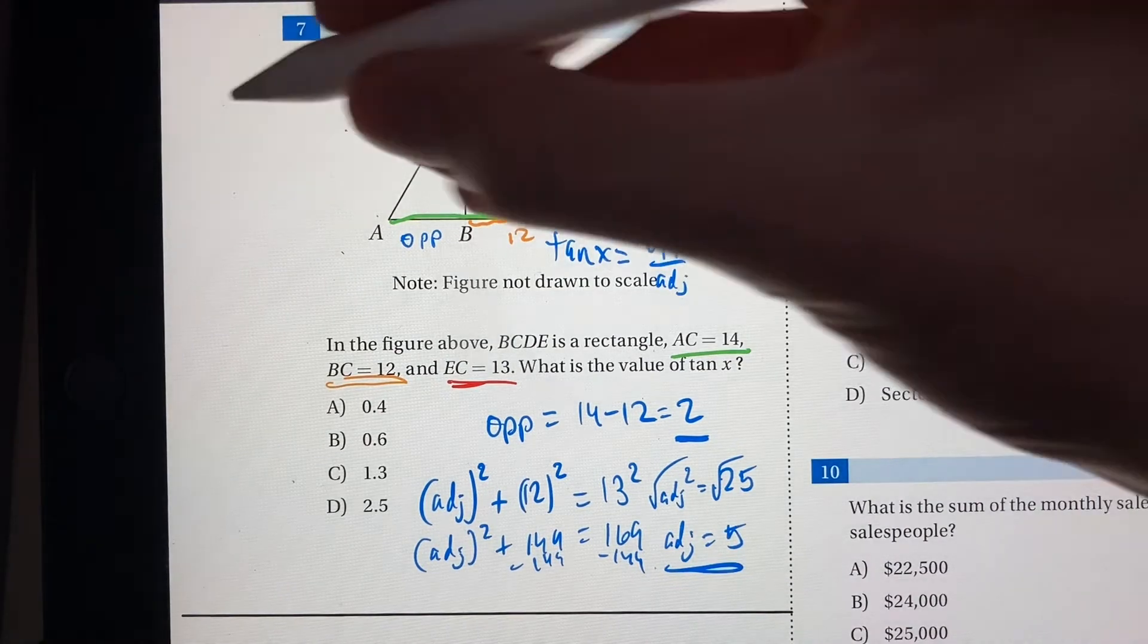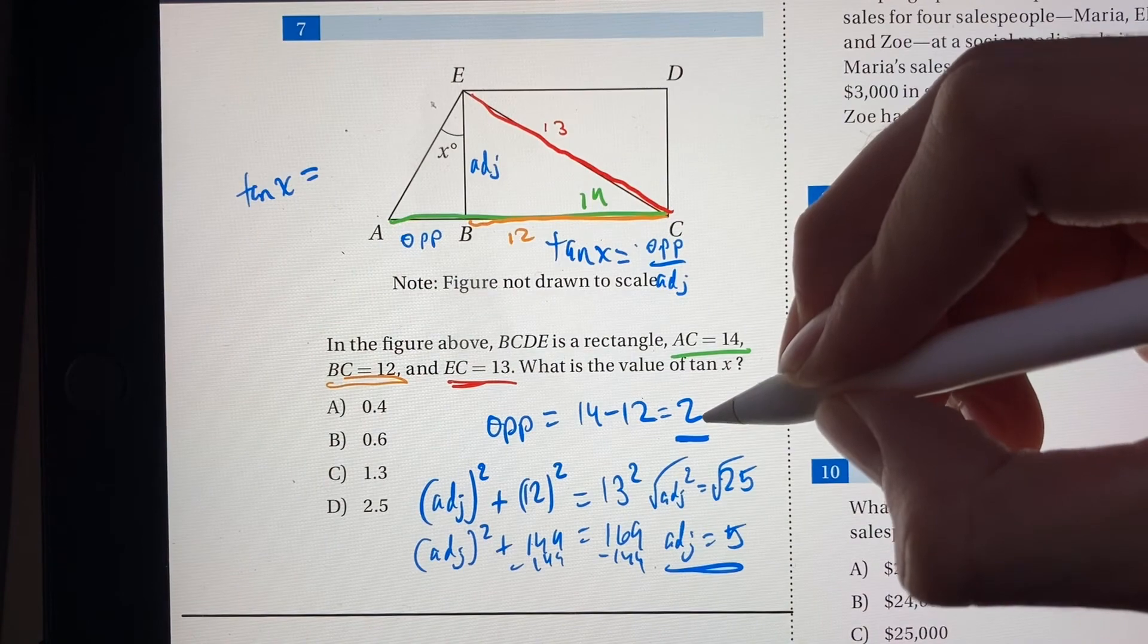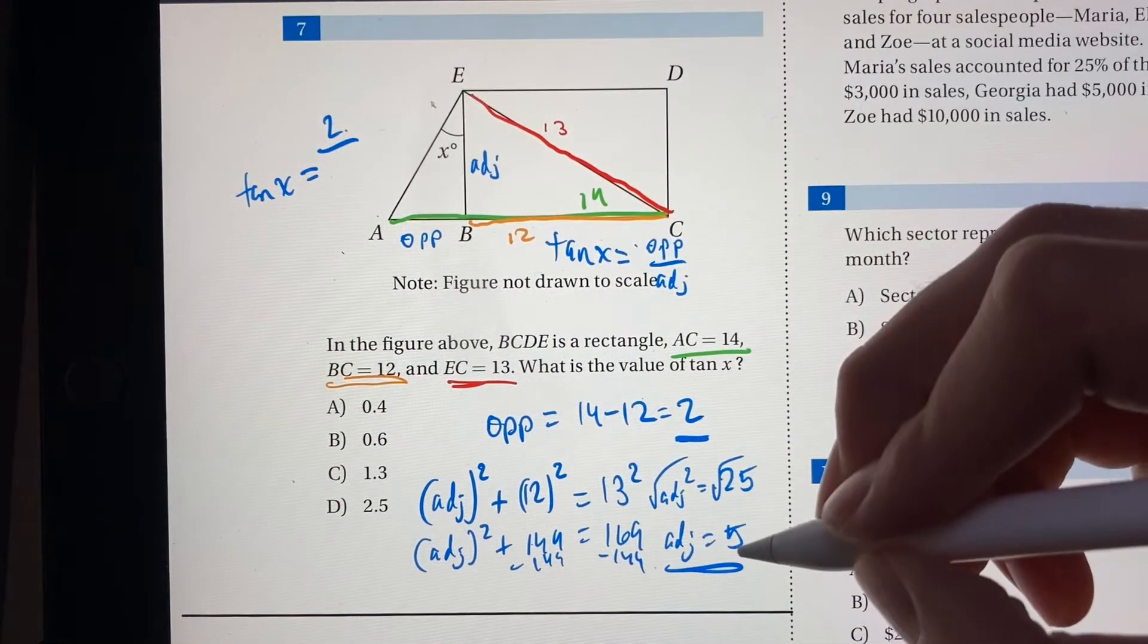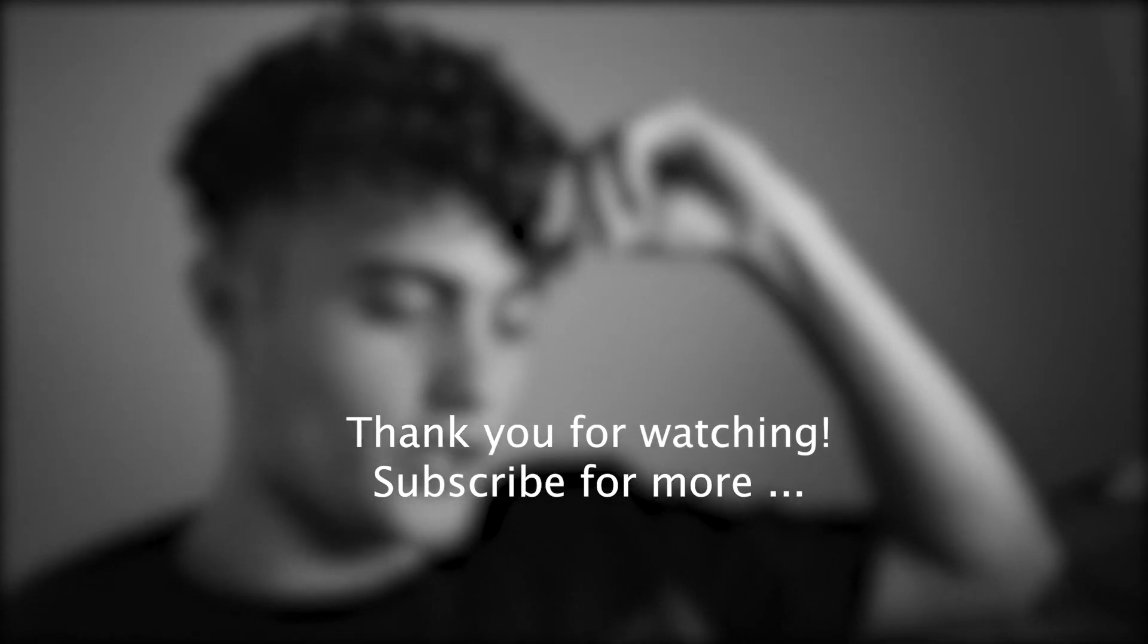So now we can solve for tangent x really easily. So tangent x is equal to opposite, which we found was 2, over adjacent, which is 5. So 2 over 5 is just 0.4.